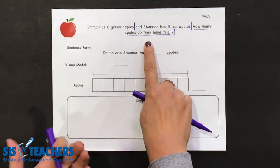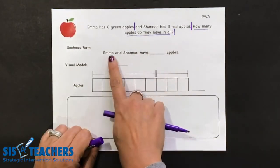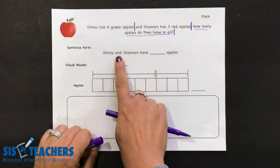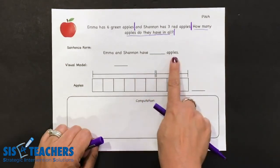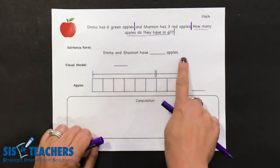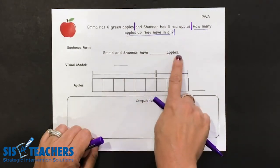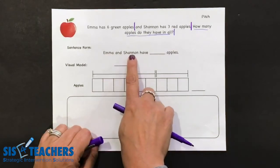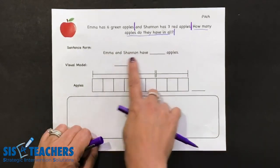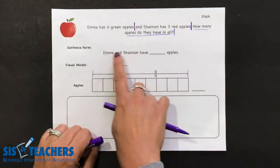You could have your kids talk about the story and ask what it's looking for. But the sentence form here is that Emma and Shannon have, hmm, which stands for that blank we don't know, apples. Over time, you might put a blank for apples and later for Emma and Shannon. As the journal scaffolds, it will require first graders to fill in the portions that are their responsibility.